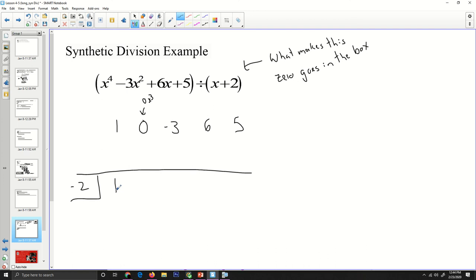What I'm going to do is bring down this 1. 1 times negative 2 is negative 2. 0 and negative 2 is negative 2. Negative 2 times negative 2 is 4. 4 and negative 3 is 1. 1 times negative 2 is negative 2. Negative 2 and 6 is 4. 4 times negative 2 is negative 8. Negative 8 and 5 is negative 3.